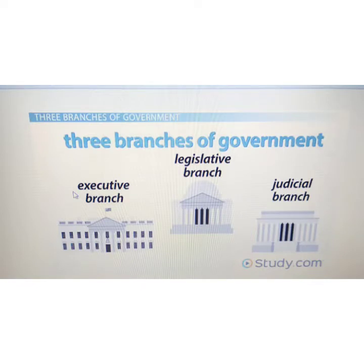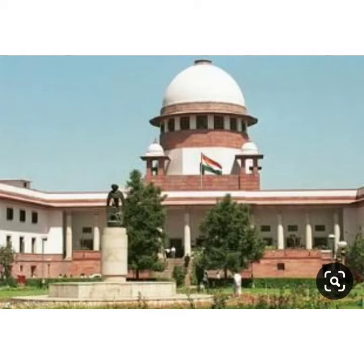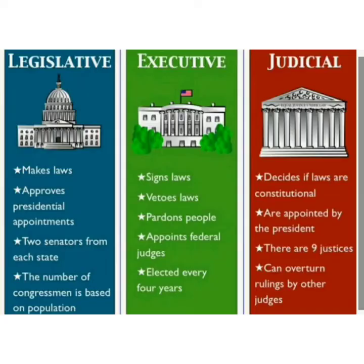Children, in India the government is divided into three branches, namely legislative, executive, and judiciary. Legislative or parliament makes laws for the country. Once laws have been made and passed, the executive makes sure that these laws are followed by the people. The next and the most powerful of the three branches is judiciary. Judiciary consists of all the courts of the country — district courts in the states, high courts in the capitals of the various states, and one Supreme Court. People can go to these courts to seek justice. So children, there are three branches of government: legislative, executive, and judiciary.